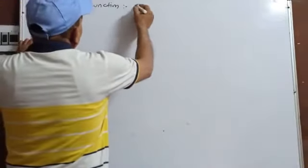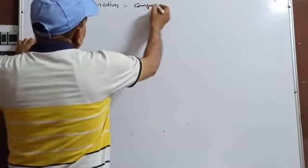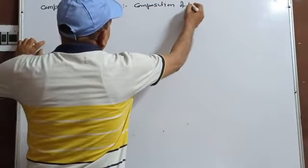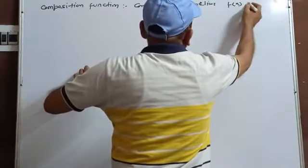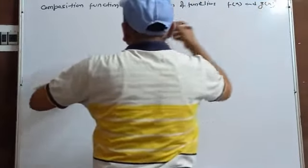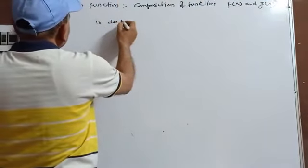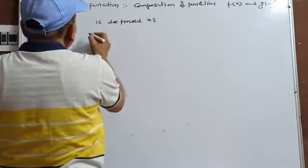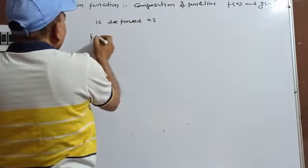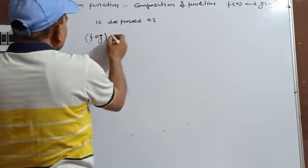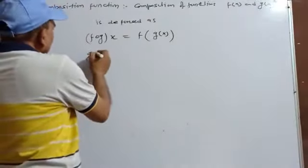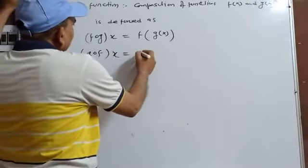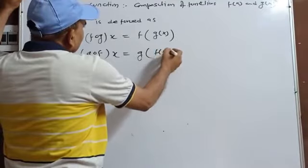Composition of functions f(x) and g(x) is defined as fog(x), which equals f(g(x)). Similarly, gof(x) equals g(f(x)).